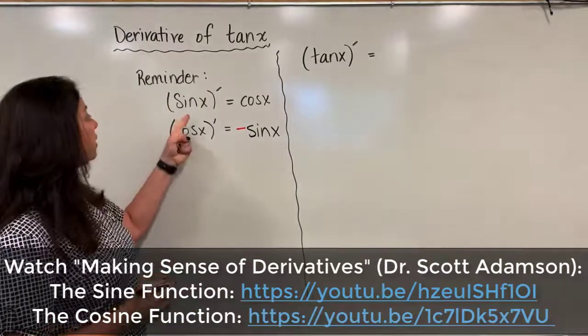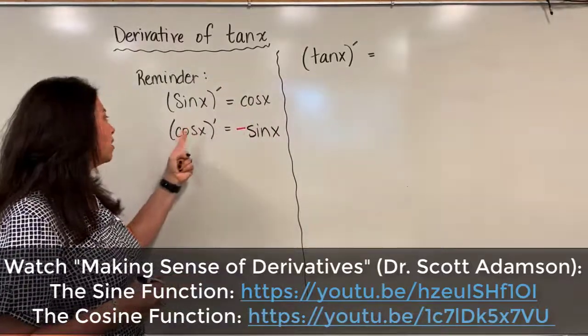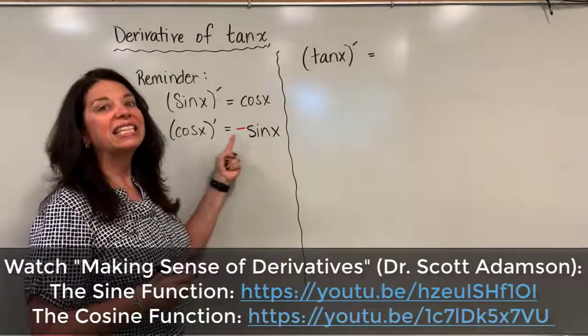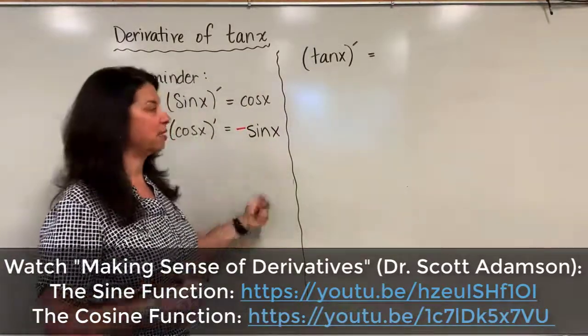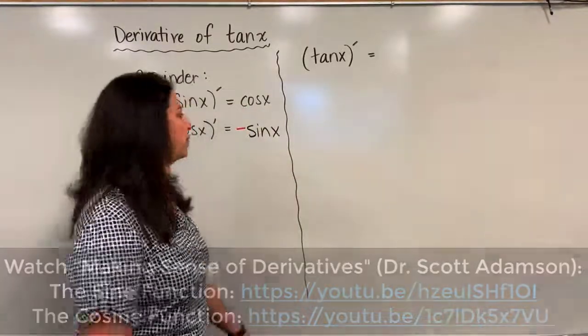So just a reminder: sine x's derivative is cosine x and cosine x's derivative is negative sine x. We're going to use those ideas to help us figure out derivative of tangent x.